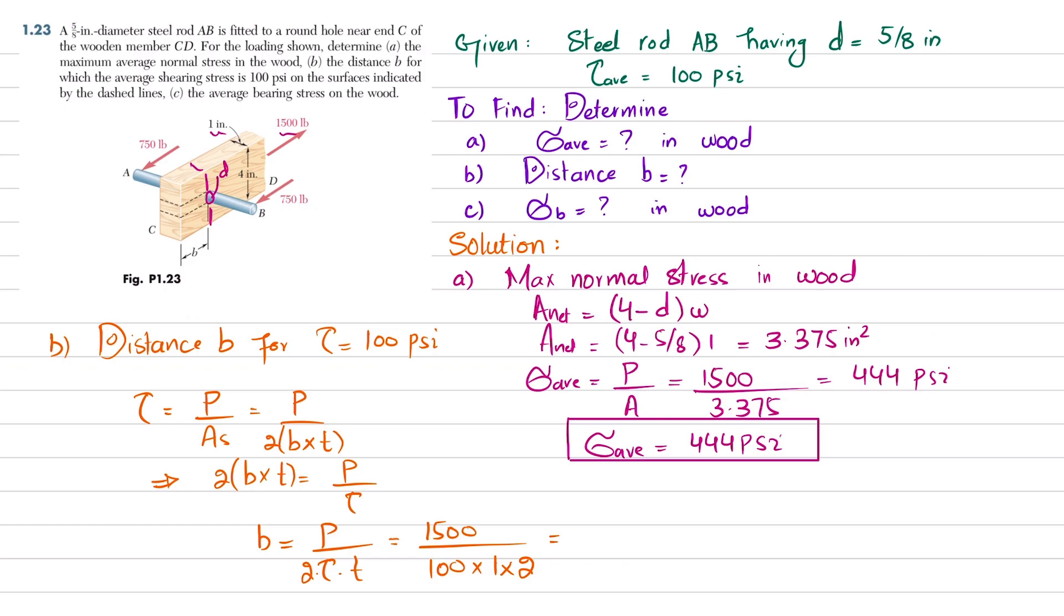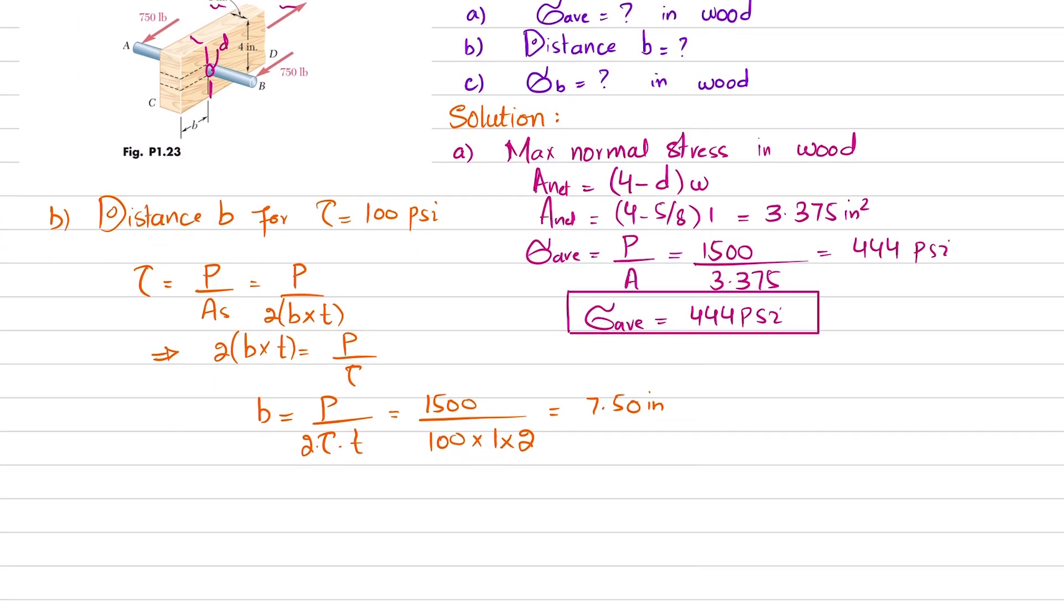Thickness is given as 1 multiplied by 2. So from here you will get B equal to 7.50 inches. B equals 7.50 inches. This is the answer of our second part.